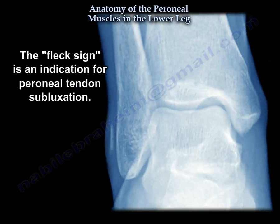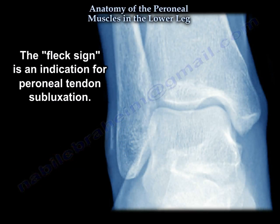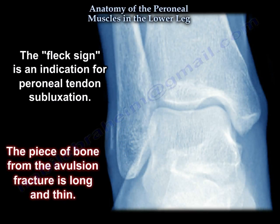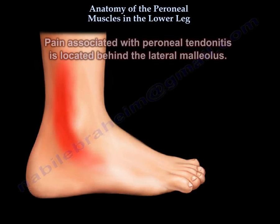A pathognomonic sign for perineal tendon subluxation is an avulsion of a piece of bone from the fibula. The flex sign is an indication for perineal tendon subluxation. Sometimes this avulsion fracture of the fibula is called the rim fracture. The piece of bone from the avulsion fracture is long and thin. Tear of the superior perineal retinaculum may be misdiagnosed because of the associated pain, swelling, and ecchymosis that may hinder early diagnosis. Pain associated with perineal tendons is located behind the lateral malleolus.